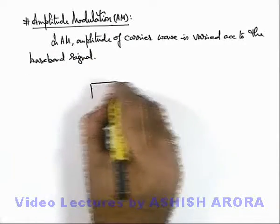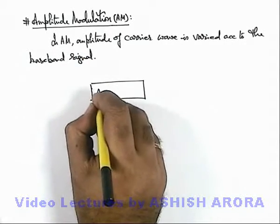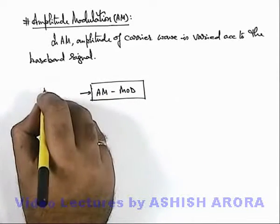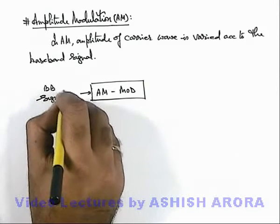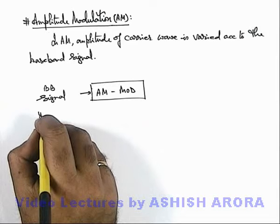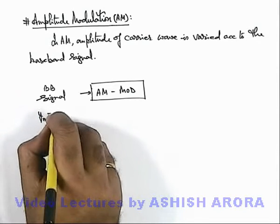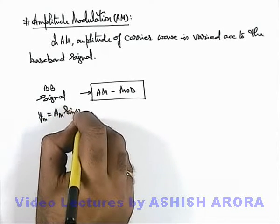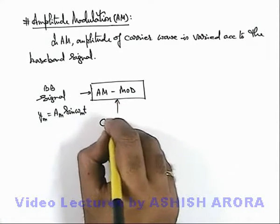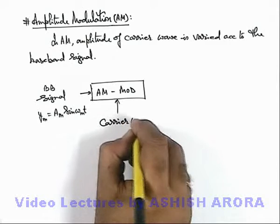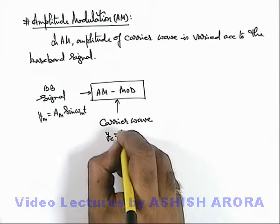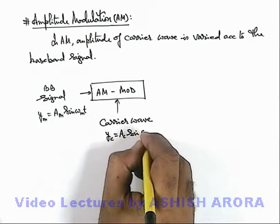Here, if we have a device that is an AM modulator, in which a baseband signal is supplied having displacement in the form of ym = Em·sin(ωmt), and we give input a carrier wave which is high frequency, that is yc = Ec·sin(ωct).